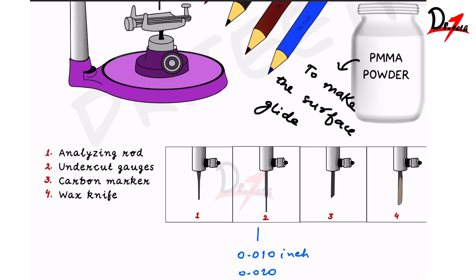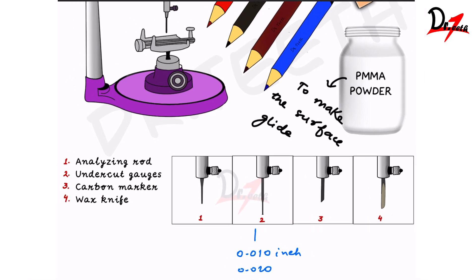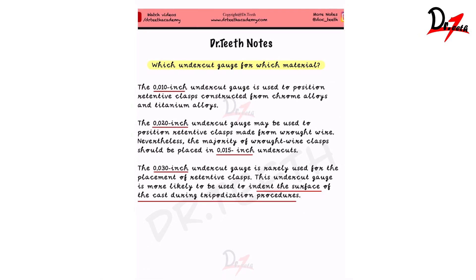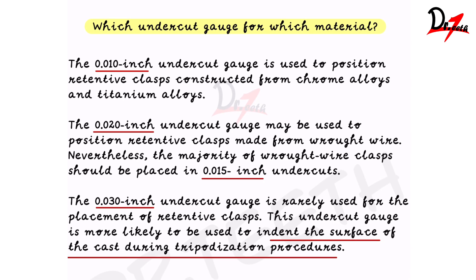Undercut gauges come in various sizes: 0.010 inch, 0.020 inch, and 0.030 inch. We'll be seeing the indications for each of these. Then there is the carbon marker — those thick lead pencils — which you use to mark on the cast. We also have a wax knife, used for carving wax that is applied to block out certain areas during the processing part. These are the basic armamentariums we require.